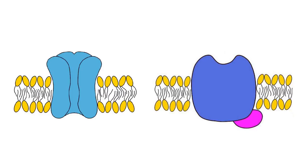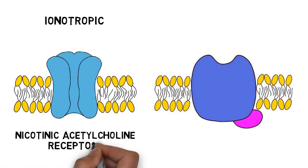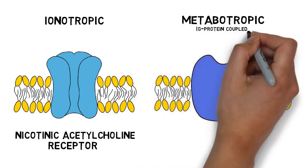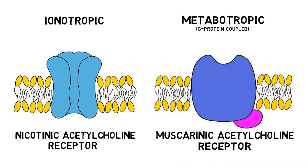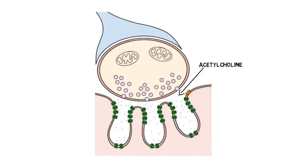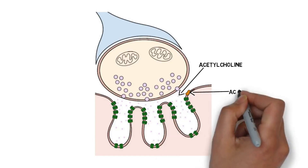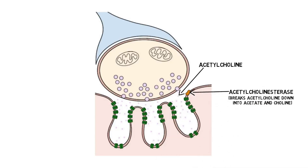Acetylcholine acts on two families of receptors, and each receptor family has several subtypes. One family is ionotropic; they are called nicotinic acetylcholine receptors because nicotine also binds to and activates the receptors, and their activation generally results in excitation of the neuron. Another family is metabotropic; these are called muscarinic acetylcholine receptors because a substance called muscarin binds to them, and their effects depend on the subtype of the receptor. The action of acetylcholine in the synapse is terminated by an enzyme called acetylcholinesterase, which breaks acetylcholine down into acetate and choline. The choline is then transported back into neurons to synthesize more acetylcholine.